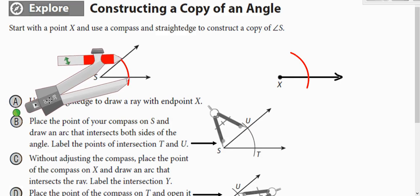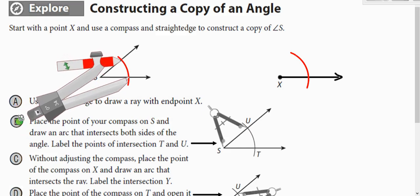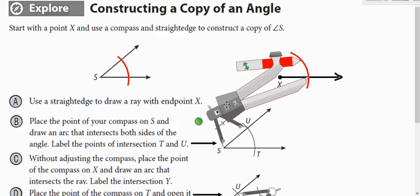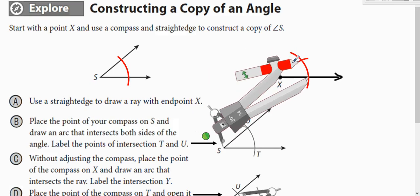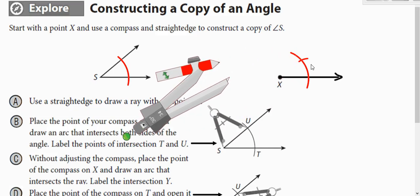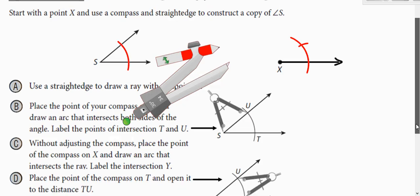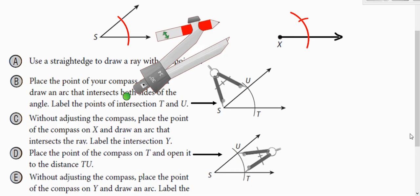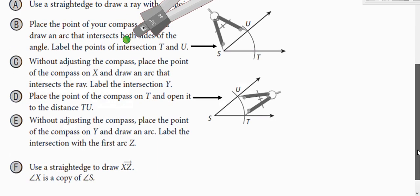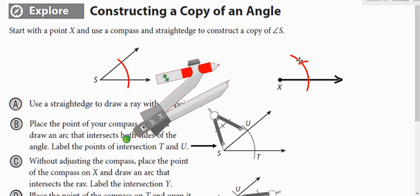So now you're going to take your compass back to the original angle, and you're going to measure the opening of that arc. You measure from where the arc touches the angle in both places, that's how wide you stretch your compass. And then take your compass to where you're copying it, and make a little arc so that you have the X formed by the two arcs.